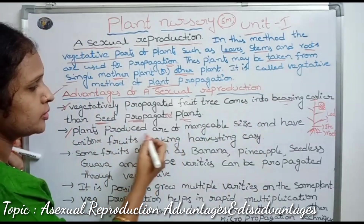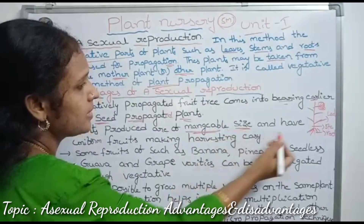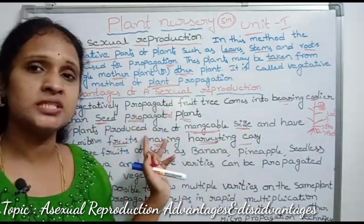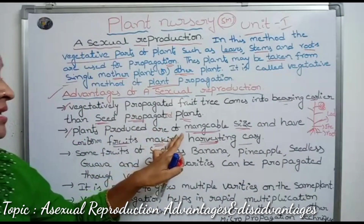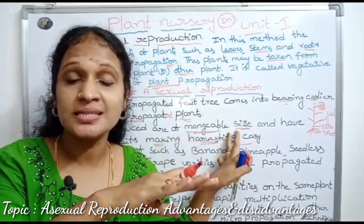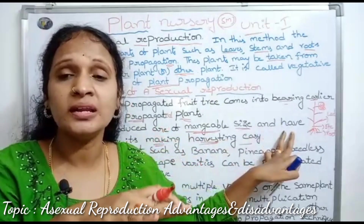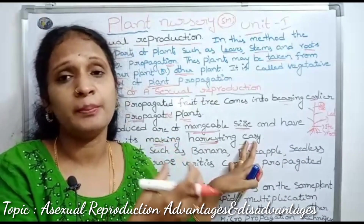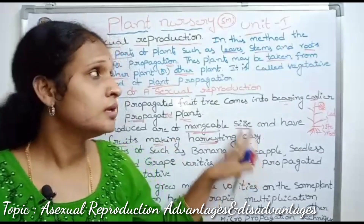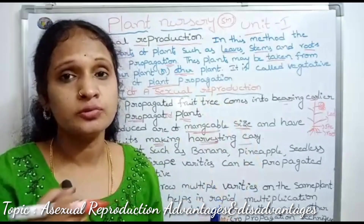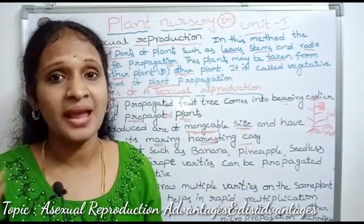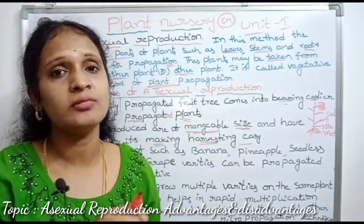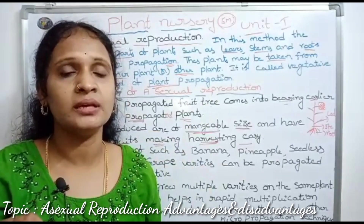Second advantage: plants produced are of manageable size and have uniform fruits, making harvesting easy. Vegetatively propagated plants are uniform, meaning equal in size. The fruits and plants show similar yield and similar growth, maintaining uniformity.